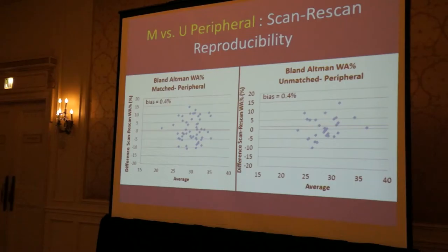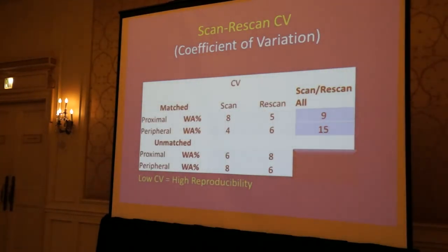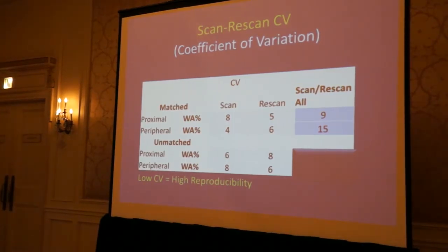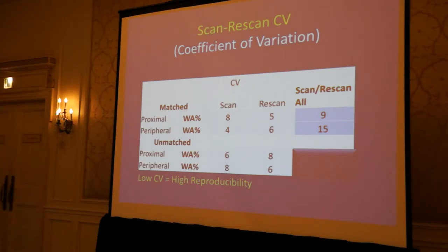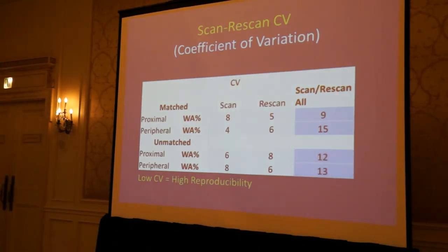Lastly, we wanted to compare the coefficient of variation for technique variability versus intra-observer variability. For matched images, the technique variability was significantly higher than the intra-observer variability, suggesting lower measurement reproducibility, which we attribute to the probe not entering the same airway branch on re-insertion. However, for unmatched images, the scan-rescan technique CV values were not significantly higher than the unmatched values.